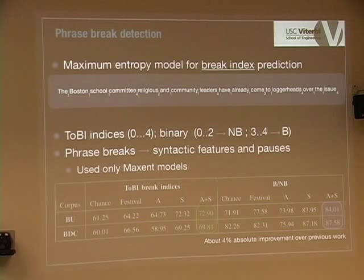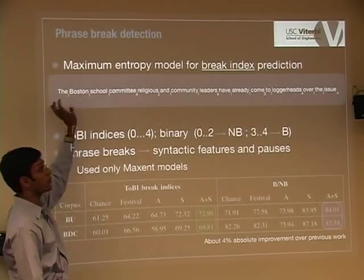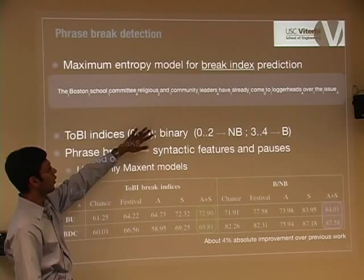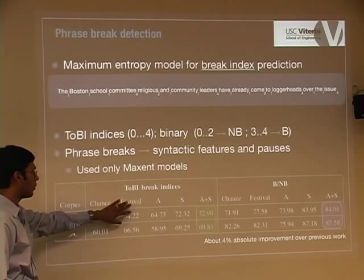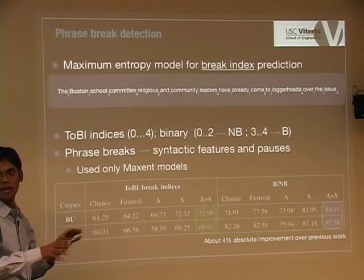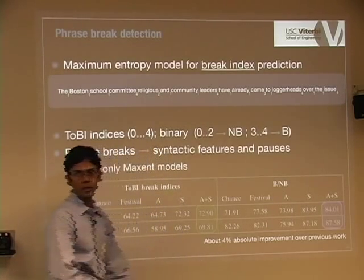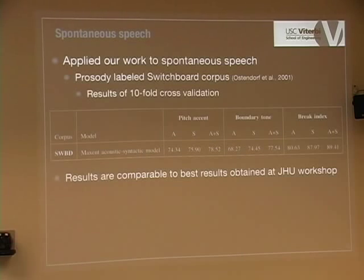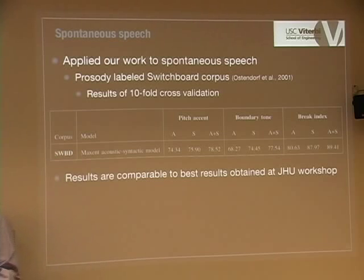We've also done this for phrase break detection. At each word, we detect what the break index is; a higher value means there is a phrase break. We compared with state-of-the-art out-of-the-box labelers such as Festival TTS and AT&T Natural Voices Toolkit. Using the same approach, we get absolute improvements of almost 4% over previous work for phrase break detection. For spontaneous speech, at the JHU 2006 workshop on structural event detection with Professor Mary Ostendorf, our results are not very different from the JHU results based on statistical significance tests.